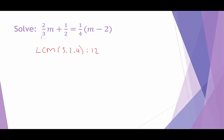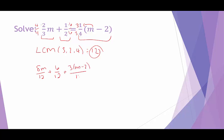We have three terms, and we're going to rewrite each term so they all have a denominator of 12. For 2/3 times m, I need to multiply by 4 over 4. For 1/2, I need to multiply by 6 over 6. And for the last term, m minus 2 would be part of the numerator, so it would be 1 times (m minus 2), multiplied by 3. This gives us 8m over 12 plus 6 over 12 plus 3 times (m minus 2) over 12.